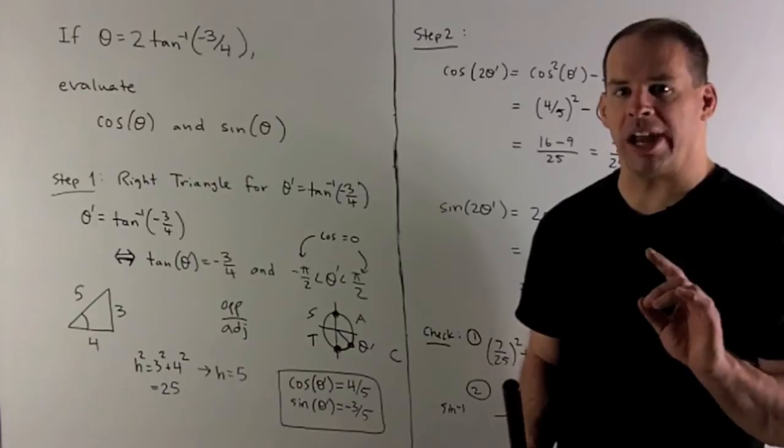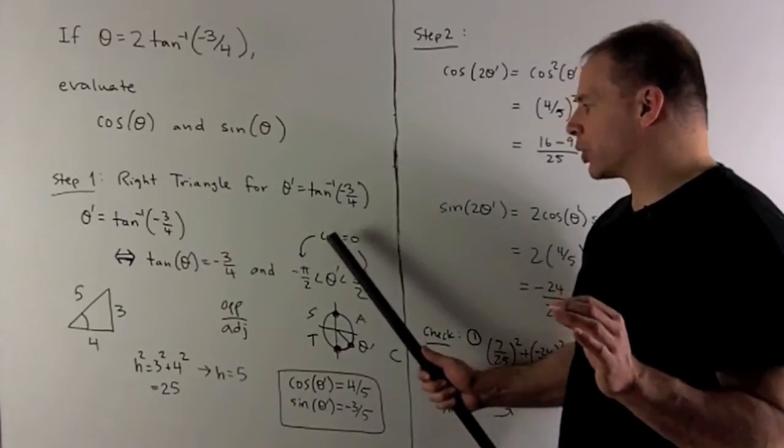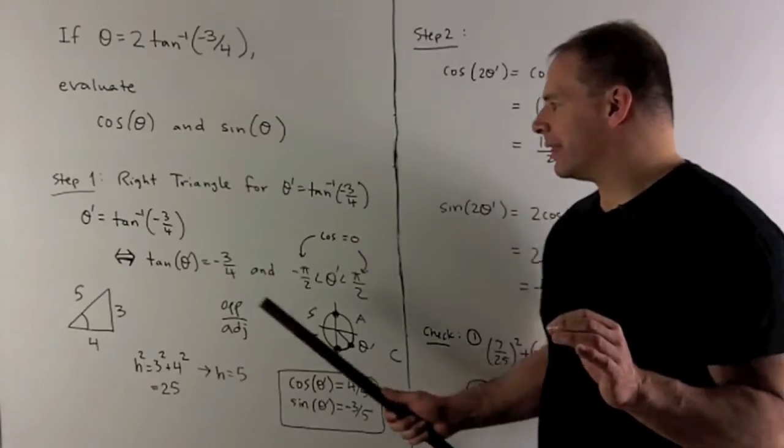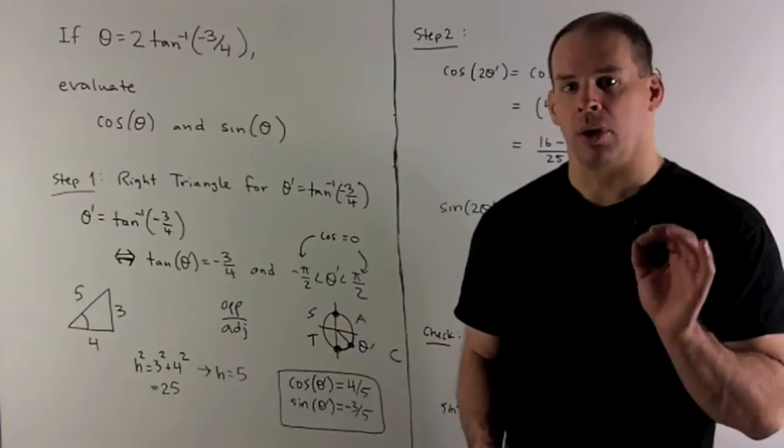So the way I remember where the ranges are, note minus pi halves, pi halves, that's where cosine is going to be equal to zero. That's where tangent is going to be undefined.